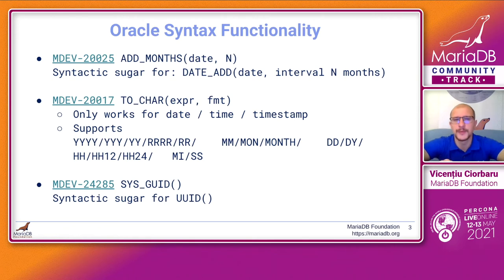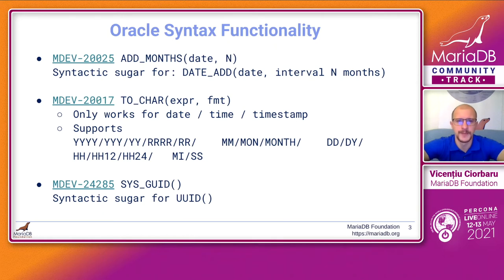We're going to start off with what MariaDB has been doing since the first release of 10.3, which is to add Oracle syntax functionality into MariaDB to aid in migrating applications from Oracle to MariaDB. The first one is the function called ADD_MONTHS, which is just syntactic sugar for DATE_ADD. The difference is that you do not have to specify the type of the interval — ADD_MONTHS implicitly assumes months as the interval.